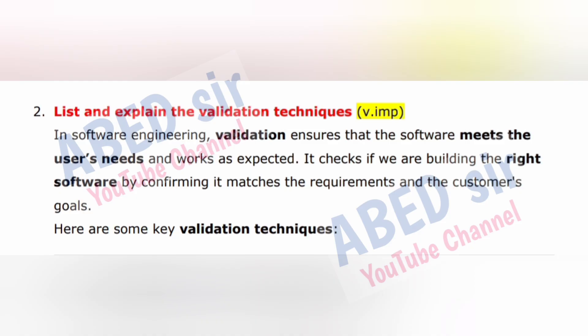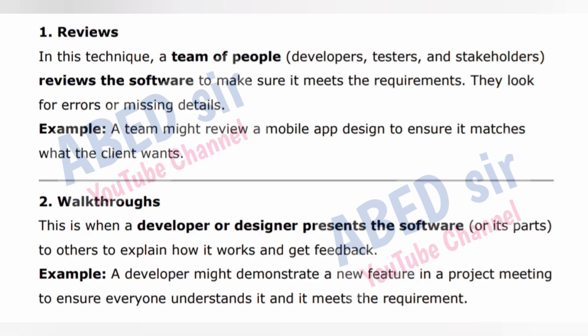In software engineering, validation ensures that the software meets the user's needs and works as expected. It checks if we are building the right software by confirming it matches the requirements and the customer's goals. Technique 1 — Reviews: a team of people — developers, testers, and stakeholders — reviews the software to make sure it meets the requirements. They look for errors or missing details. Example: a team might review a mobile app design to ensure it matches what the client wants.